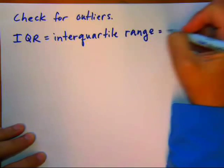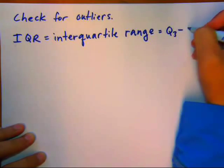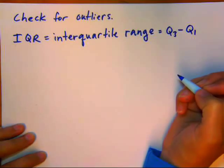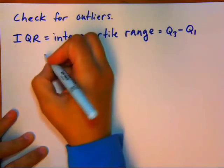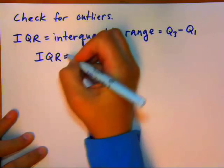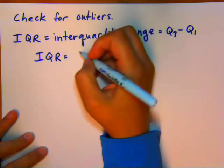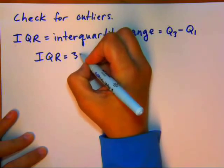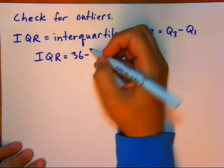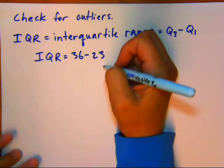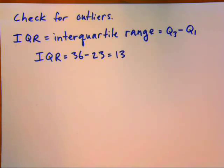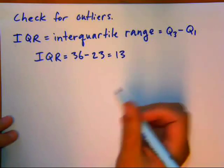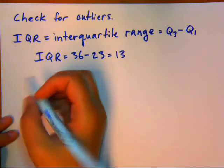And it's simply Q3 minus Q1. So if we go into what we just found on our previous page there, the IQR for this example would be equal to 36 minus 23. So there's 13 units long between Q1 and Q3, or the middle 50% of your data is going to be 13 units long on your number line.